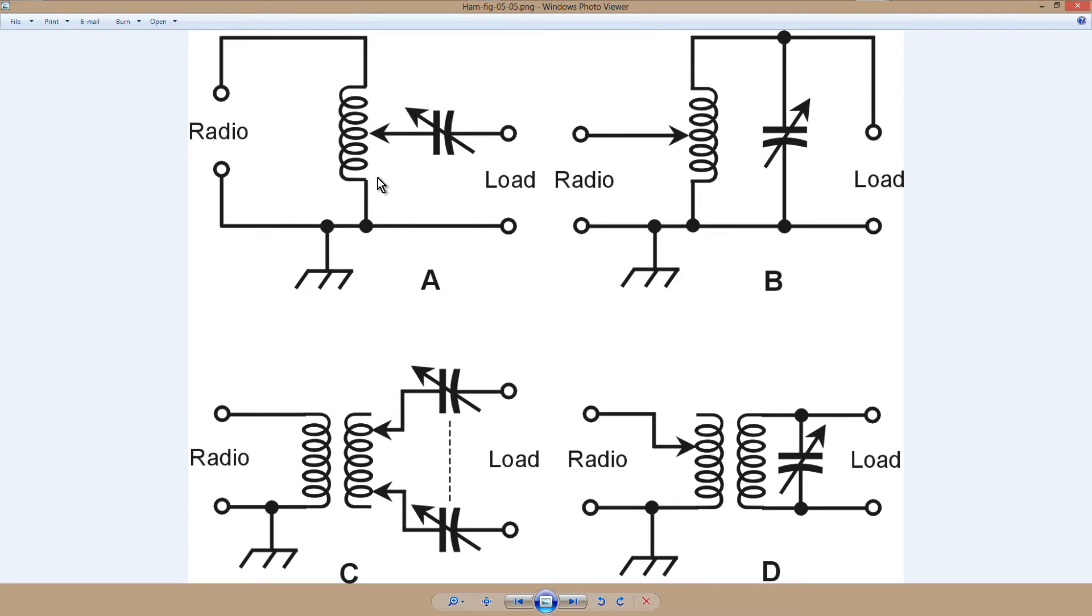You connect your radio to the tuner and then your tuner to the transmission line. In drawings A and B, those are unbalanced transmission lines like coaxial cable.